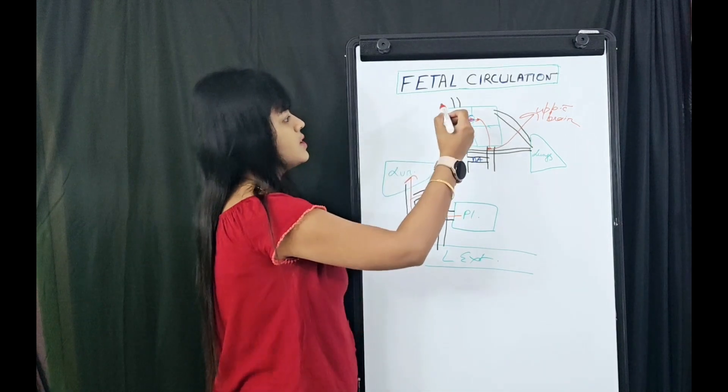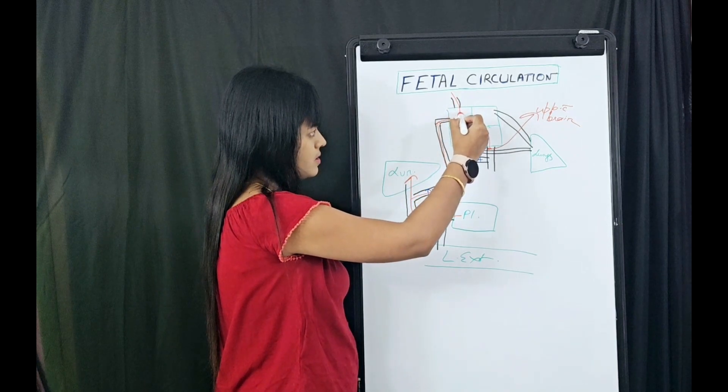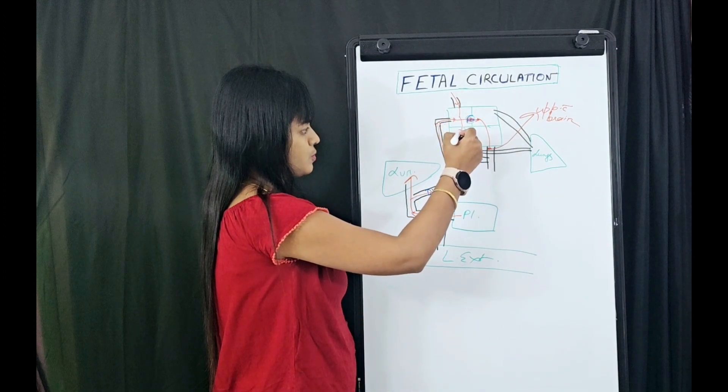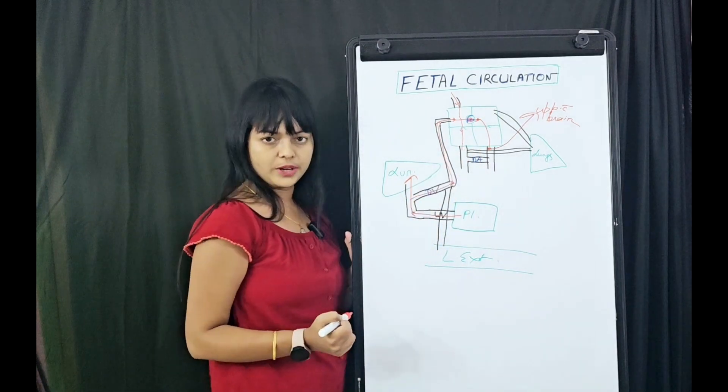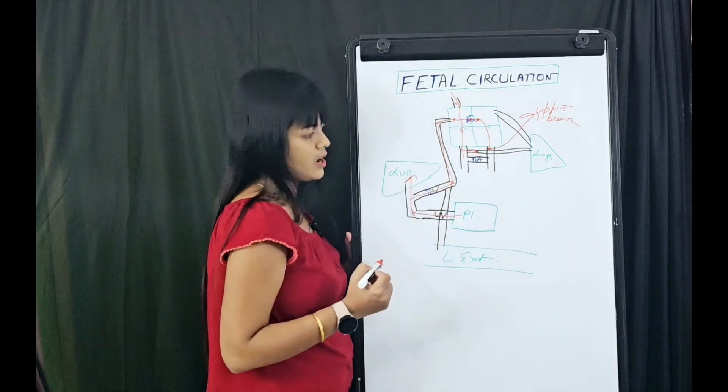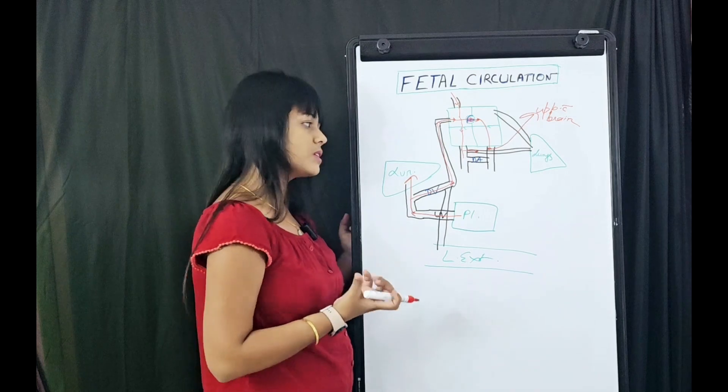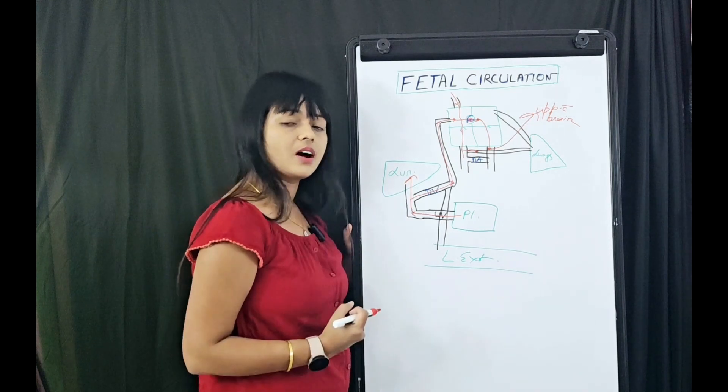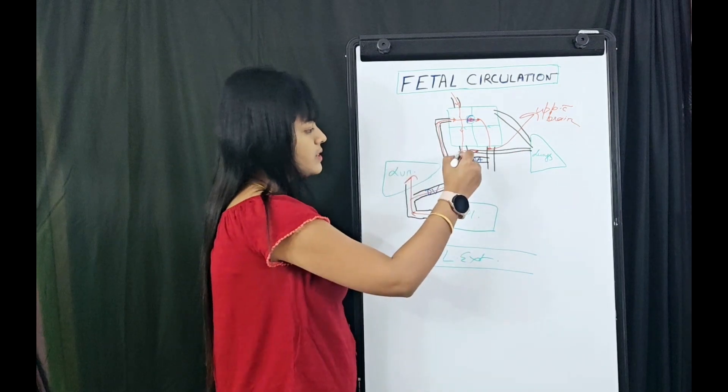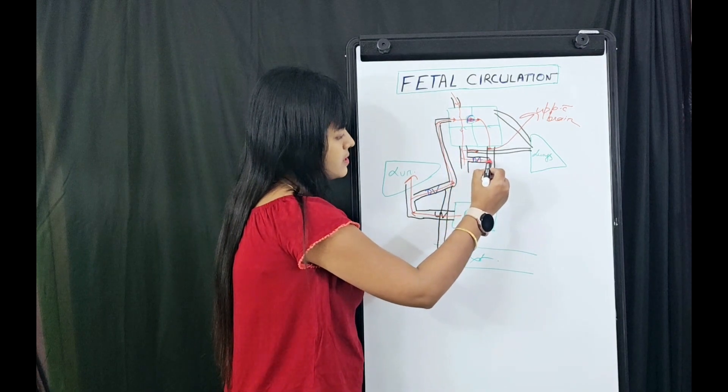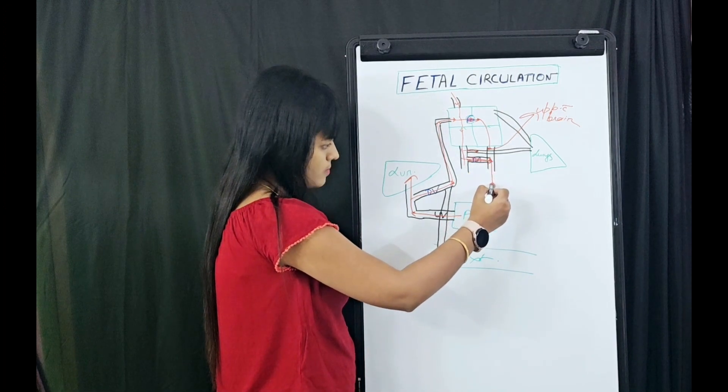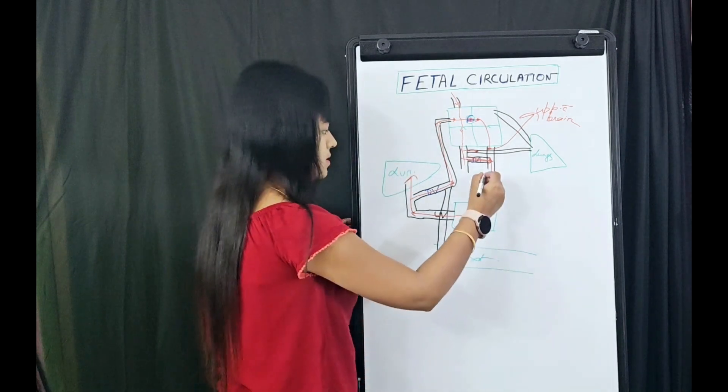Coming to the second half of the fetal circulation: blood from superior vena cava is entering the right atrium, and this blood is getting directed through the tricuspid valve to the right ventricle. From right ventricle, only 5% of the blood is going to lungs via pulmonary artery. Why only 5%? Because the resistance of the pulmonary circulation is very high in case of fetal circulation. So the rest of the blood is flowing through the ductus arteriosus to the descending aorta.